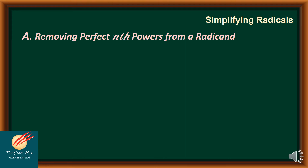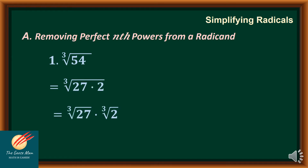The first technique in simplifying radicals is removing perfect nth powers from a radicand. For example, I have the cube root of 54. I'll factor 54 as 27 times 2, then separate it as cube root of 27 times cube root of 2. The cube root of 27 is equal to 3, so the final answer is 3 times cube root of 2.